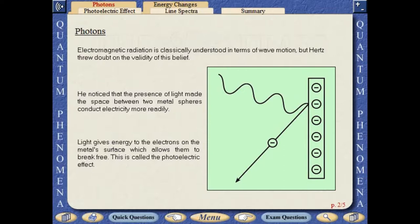Light gives energy to the electrons on the metal surface, which allows them to break free. This is called the photoelectric effect.